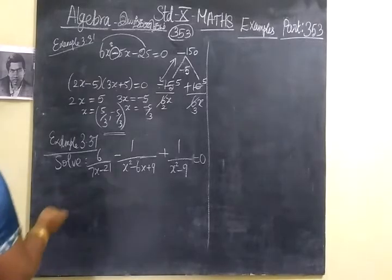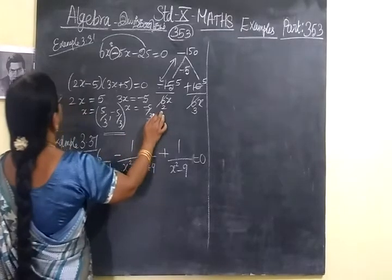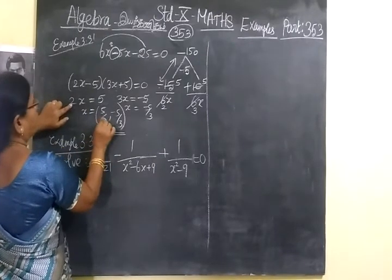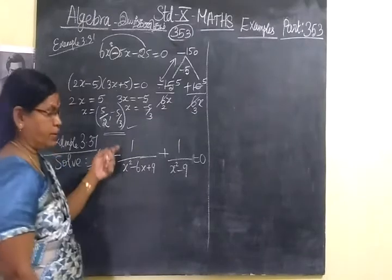5/2. Here 2 only, here 2x. 5/2. So this is the correct answer.